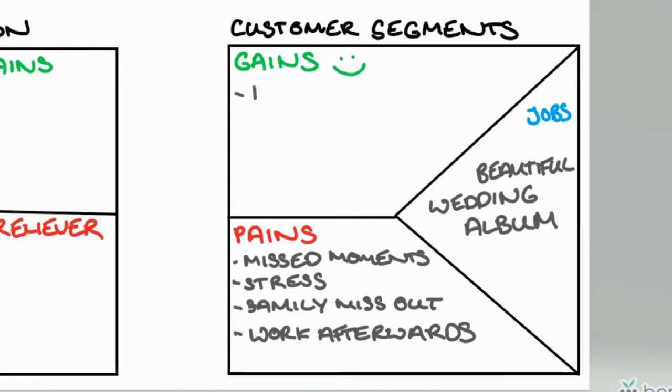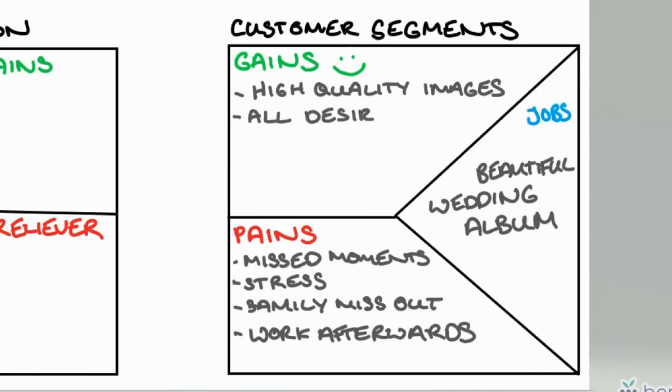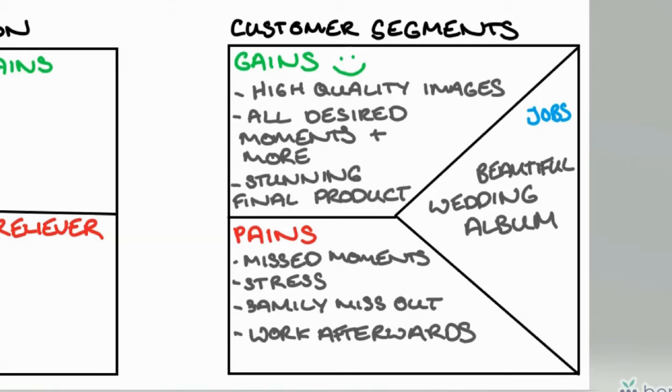The gains are the positive outcomes — things your clients want from the outcome of this specific job. In this example, they want high quality images, they want all their desired moments captured, they want to be excited about their album and wowed by these precious memories of their day, and they want a really stunning final product. We use this customer profile to learn about the customer, figure out the troubles they don't want to deal with, and what positive outcomes they're really looking for.